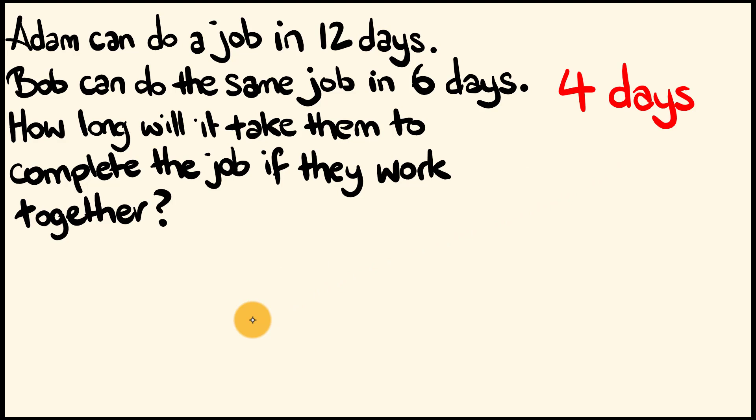So, the way we're going to do this is we're going to look at the number of days that each one of these guys do. Adam here does 12 days. We have Bob who does the same job in six days. So, the first thing we're going to do is we're going to get the number of days that Adam takes and we're going to multiply it by the number of days that Bob takes. So, let's do this. We have 12 multiplied by 6. And that's nice and easy. That equals 72.